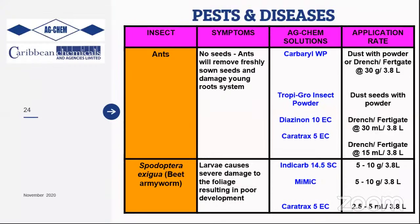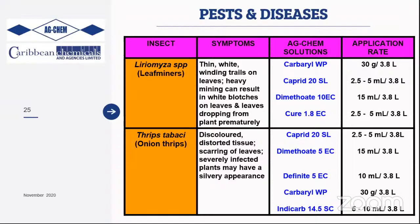Leaf miner larvae are the larval form of a small fly seen around the field. They feed between the upper and lower layers of the foliage, and severe feeding creates large lesions. Control options include Carbaryl, Cyprid — a contact and systemic insecticide — the highly effective systemic insecticide Diafenthiuron, and the contact insecticide Cyfluthrin (Cyper), each with their respective application rates.